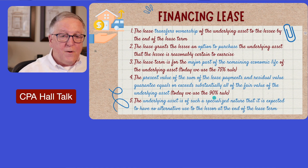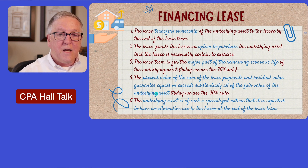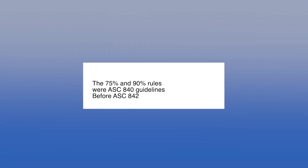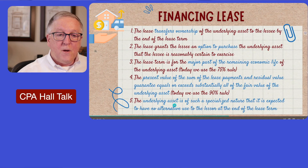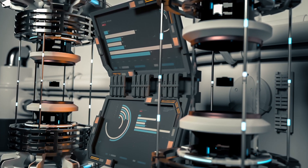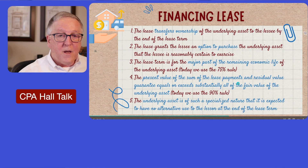ASC 842 doesn't specify 90%, but if the present value of those payments exceeds substantially all of the fair value of the underlying asset, it's a financing lease. I like to keep the 90% rule in the back of my mind — it helps. Finally, and this is new: if the underlying asset is highly specialized and would have no use to the lessor at the end of the lease, that would also be a financing lease.